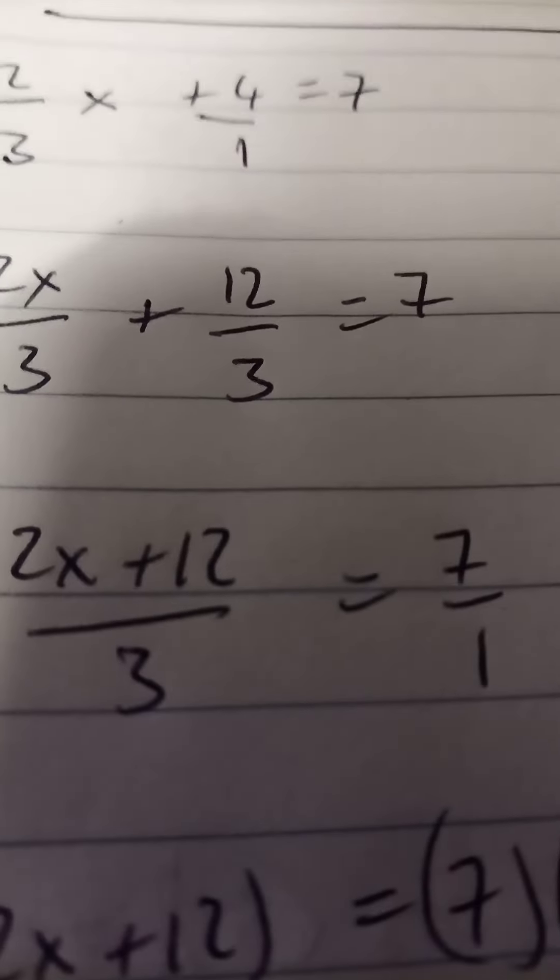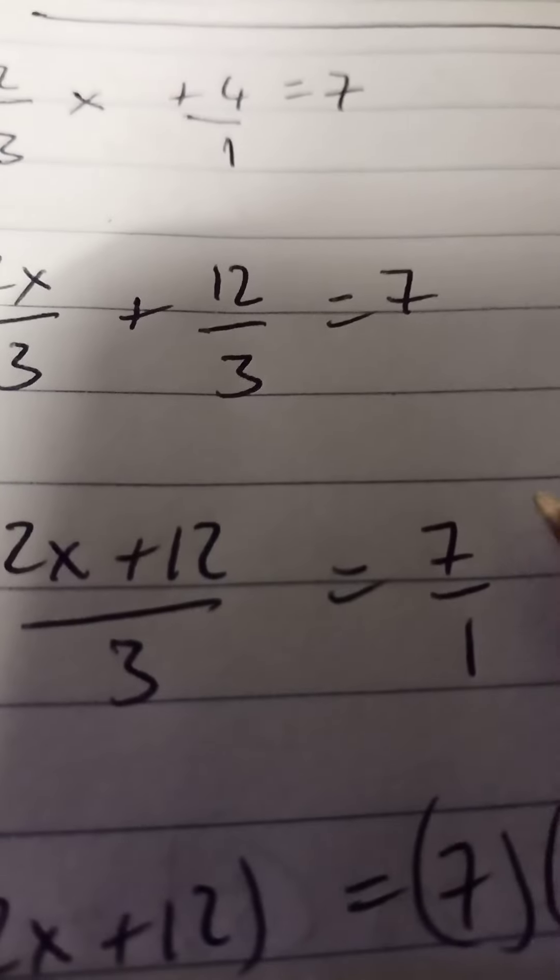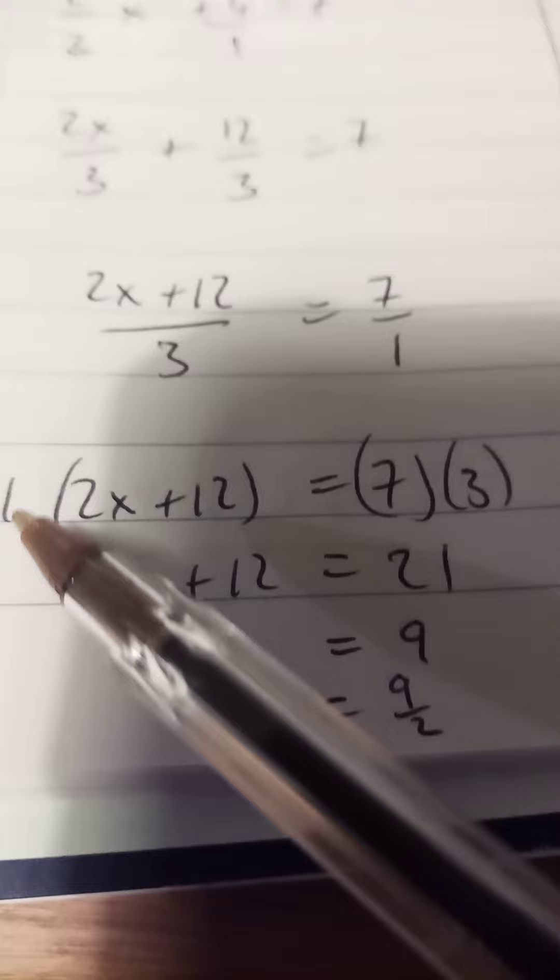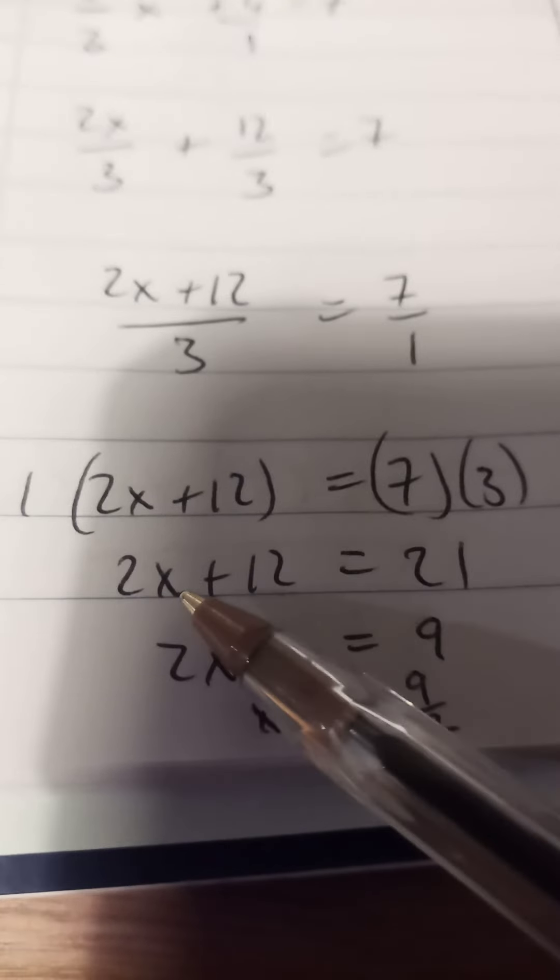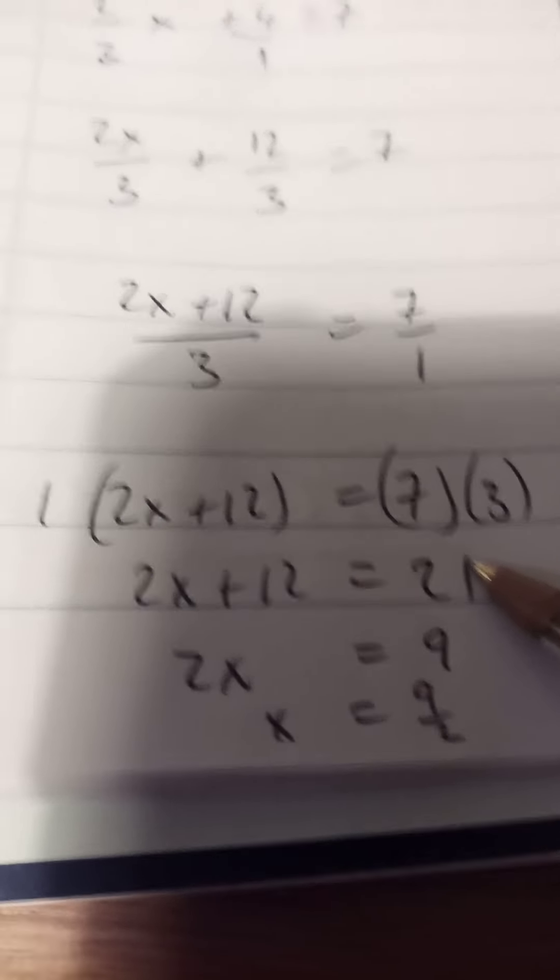Now when it's in that form we can cross multiply, so the 3 will multiply by the 7, the 1 will multiply by that which gives us the next step. When you multiply 1 by all of that you get the same thing, 7 by 3 is 21. And now we have to solve using our order of operations backwards steps.